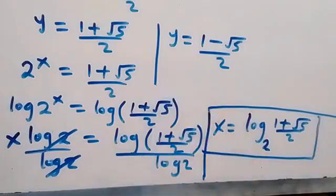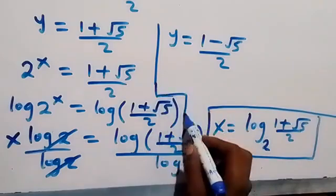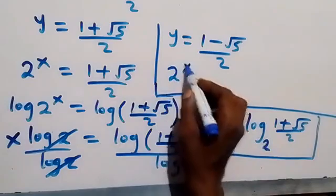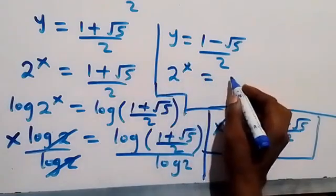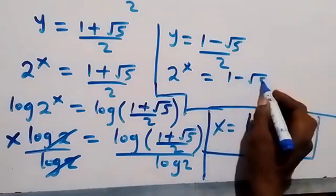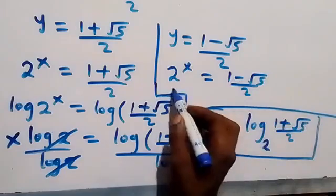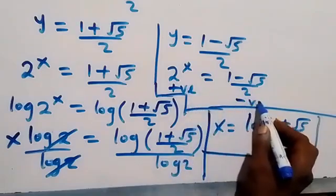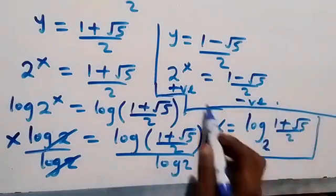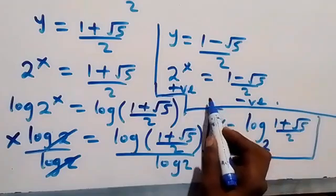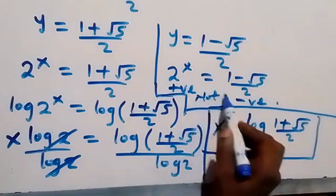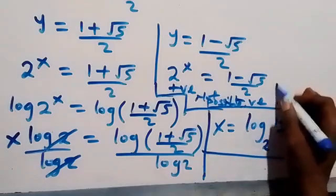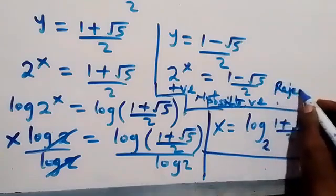Now considering the second value: y, which is 2 raised to power x, equals to 1 minus root 5 over 2. We discover that 2 raised to power x is always a positive number, but 1 minus root 5 over 2 is a negative number. Since a negative number cannot equal a positive number, this is not possible. Therefore we reject this value — there is no solution from this side.